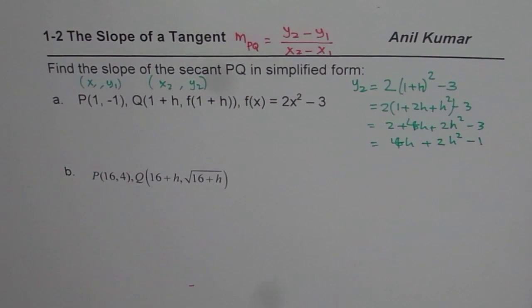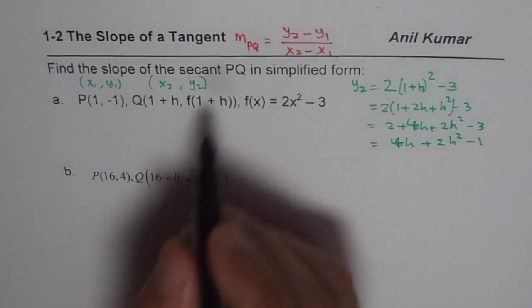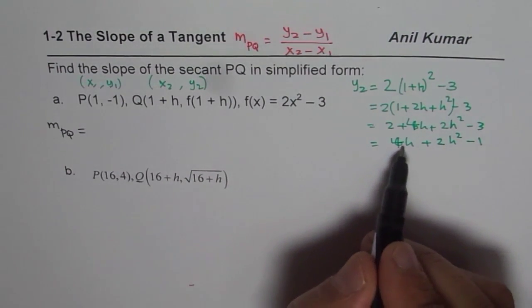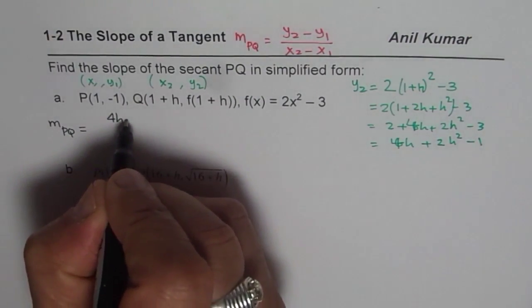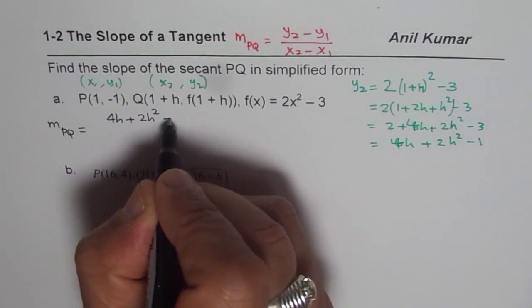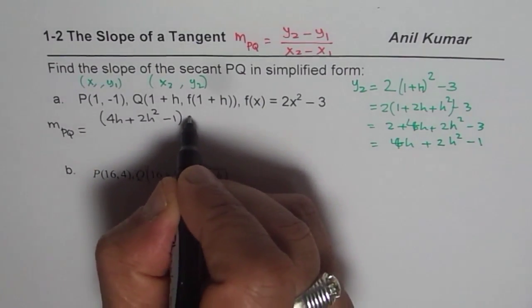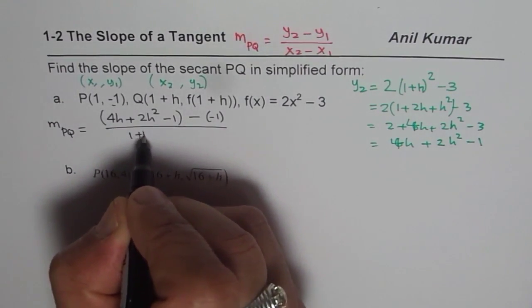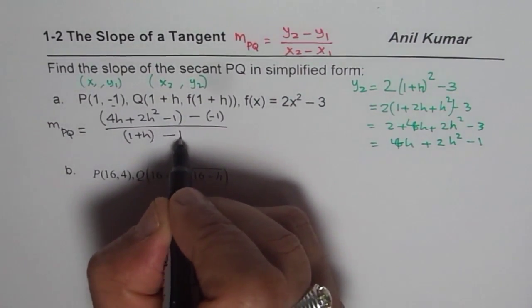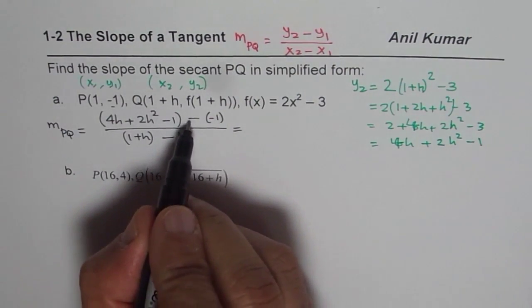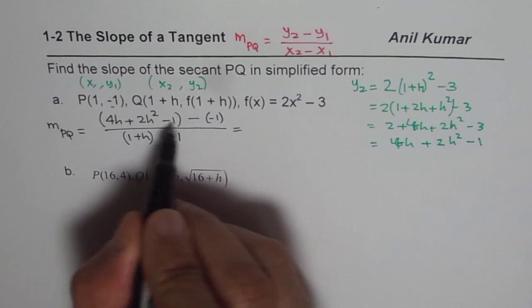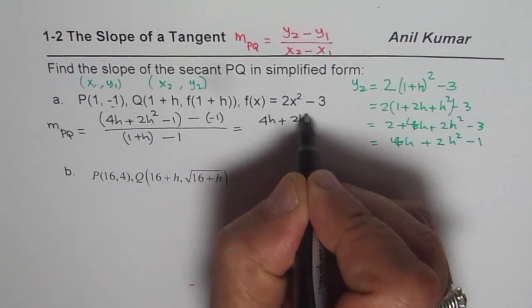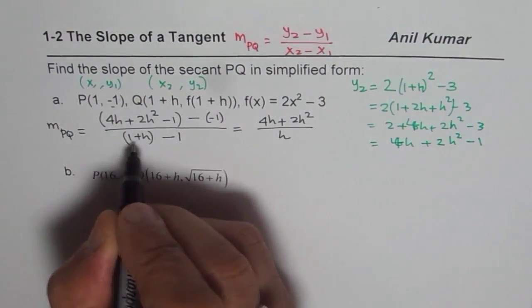Now we can find what the secant slope is, PQ. So m_PQ equals (y₂-y₁)/(x₂-x₁). y₂ is this number for us, which is 4h+2h²-1, that is y₂, minus y₁ which is -1, divided by x₂ which is 1+h, minus x₁ which is 1. Now when you simplify this, -1+1 and this -1 they become 0. So you are left with 4h+2h² divided by h, since 1-1 is 0.